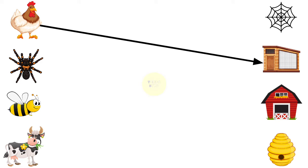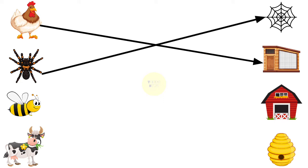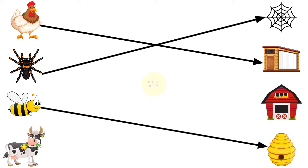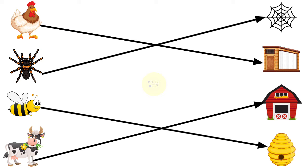Hen lives in coop. Spider lives in web. Honeybee lives in hive. Cow lives in shed.